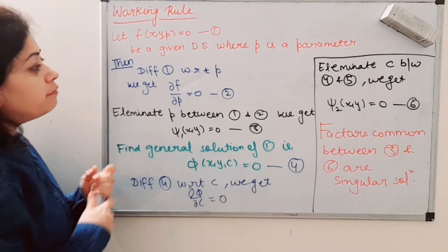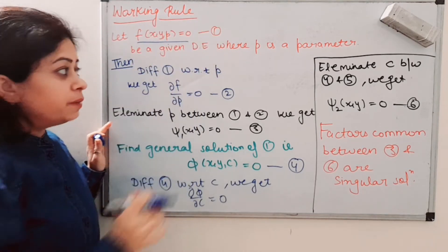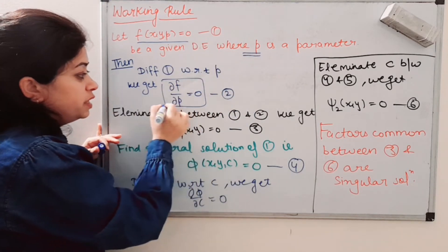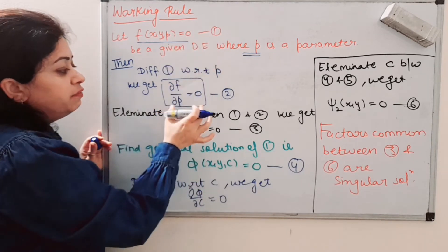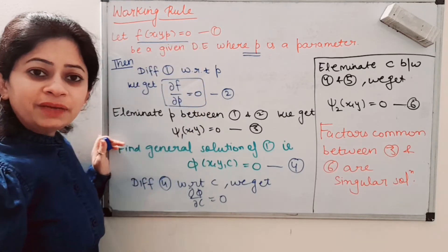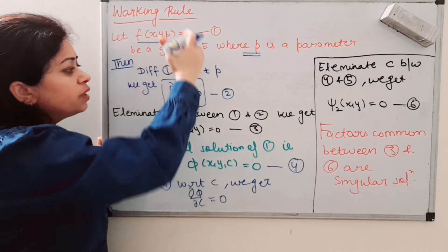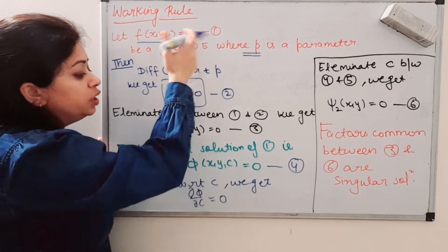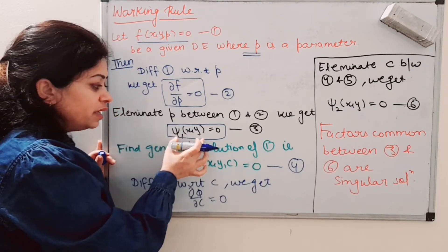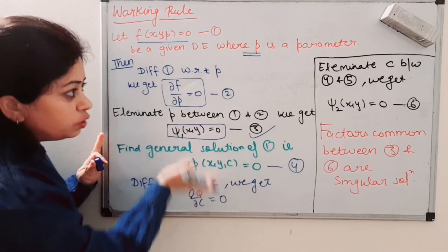So if we have any differential equation f(x, y, p) = 0, where p is a parameter, what do we need to do? We need to differentiate it with respect to p — call this equation 1. Differentiate with respect to p to get equation 2, and then eliminate p between equations 1 and 2. To eliminate p, substitute the value of p from equation 2 into equation 1, and you will get a function of x and y — we call this ψ(x, y). Sometimes we get the singular solution here only.